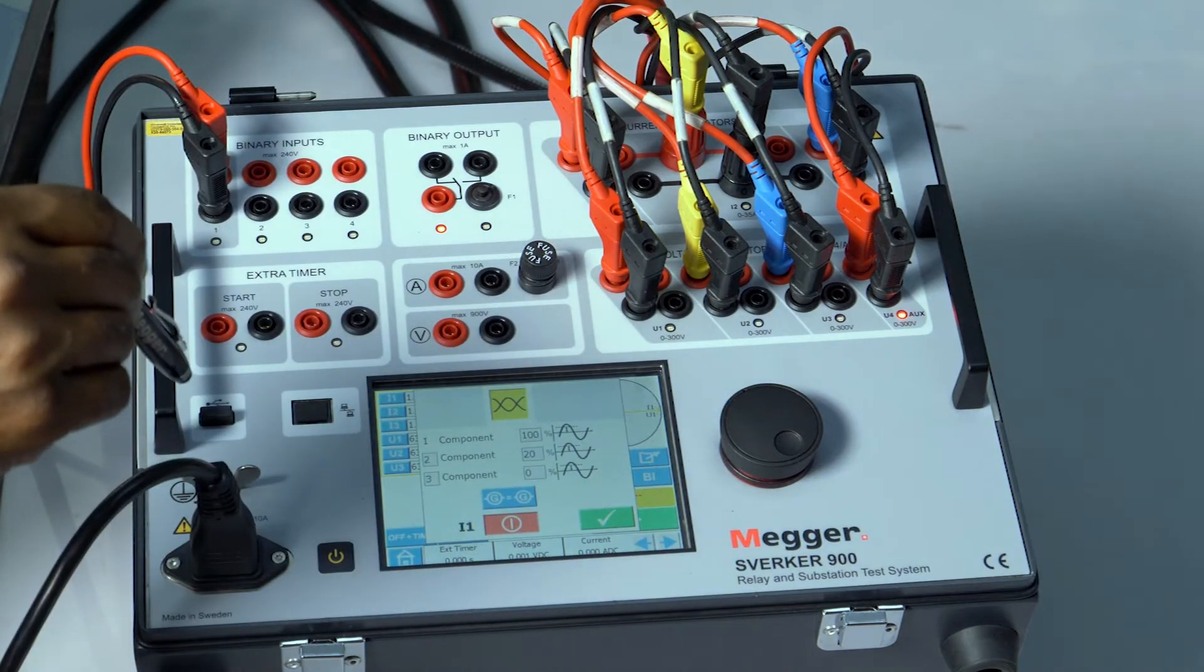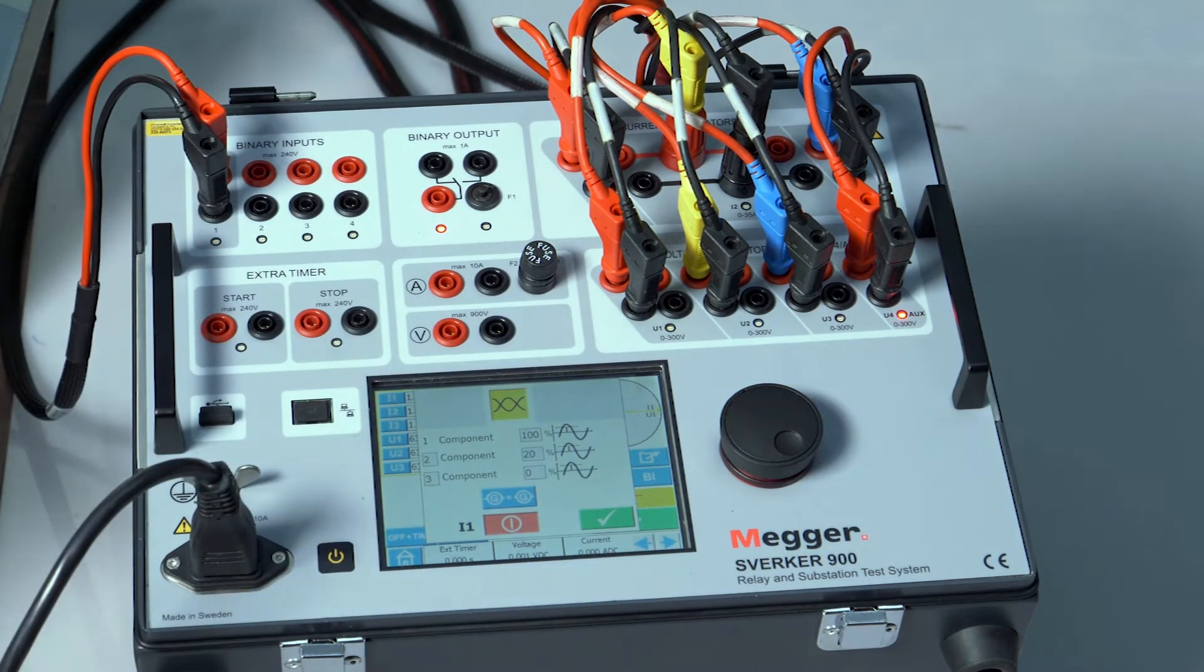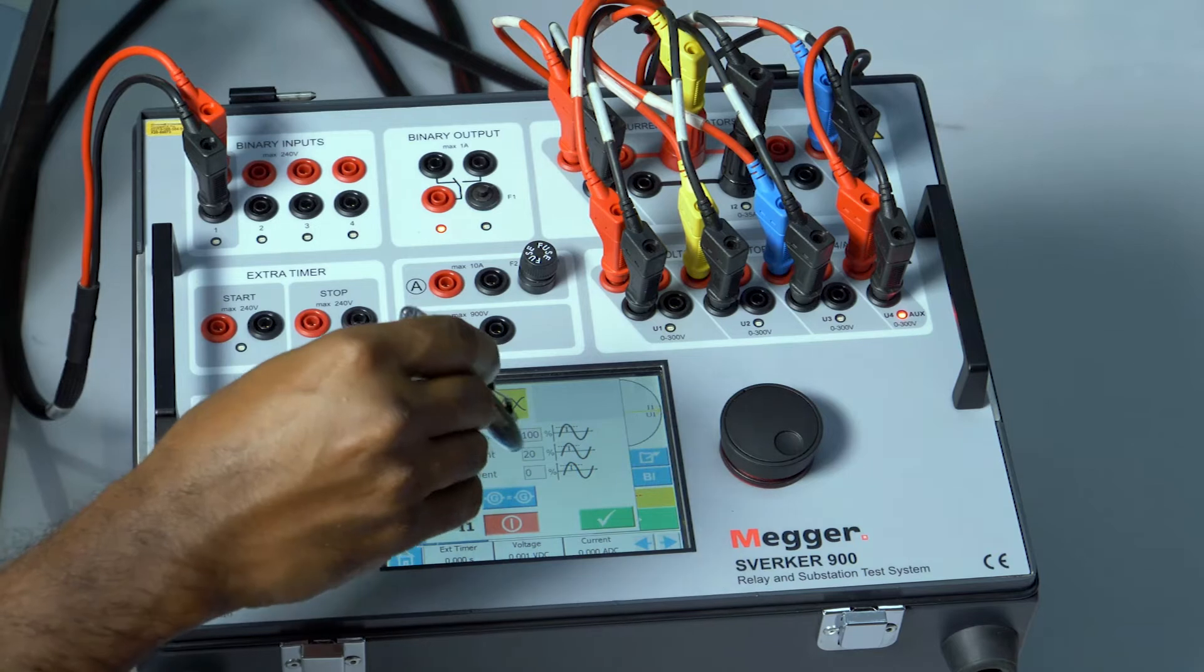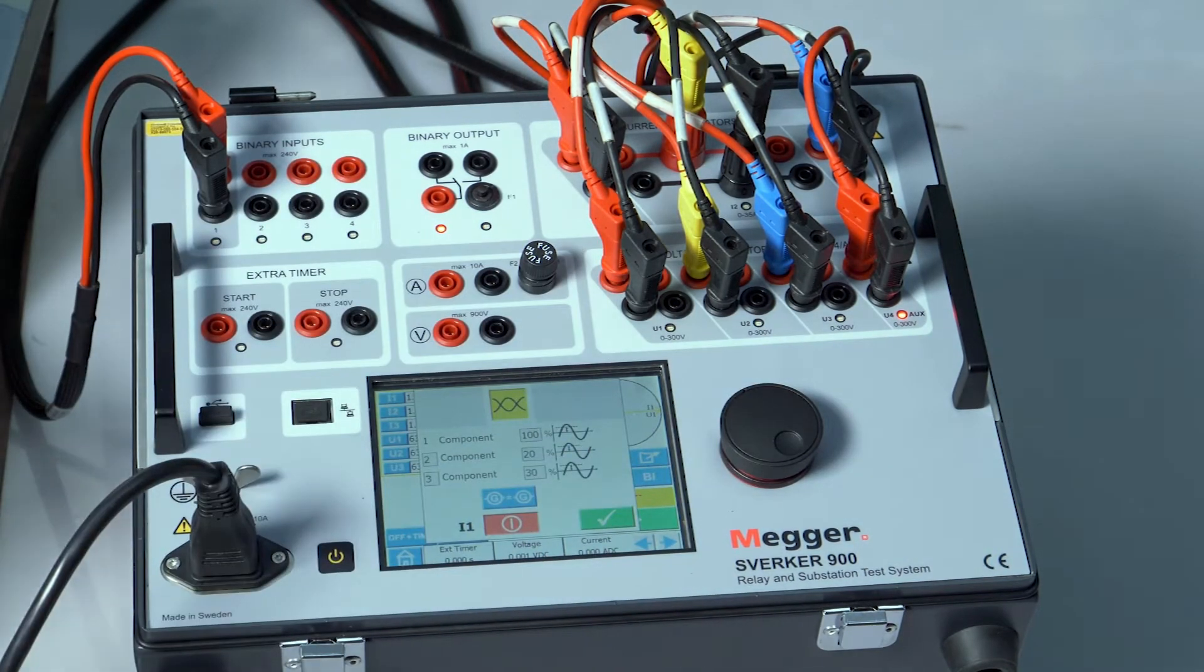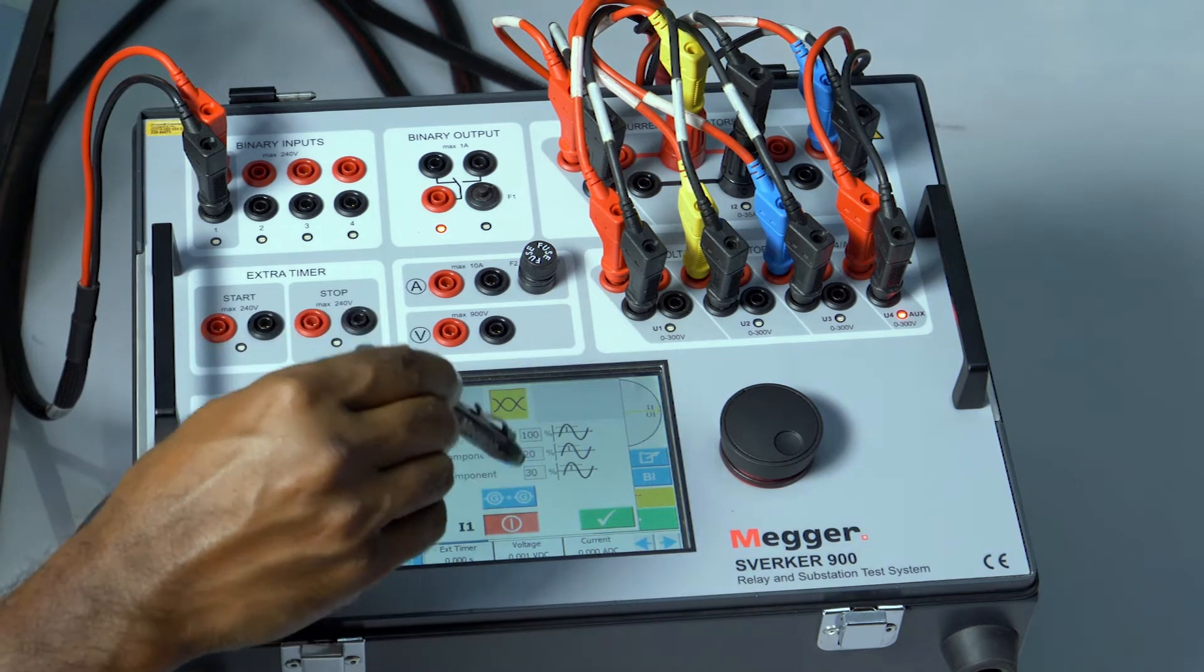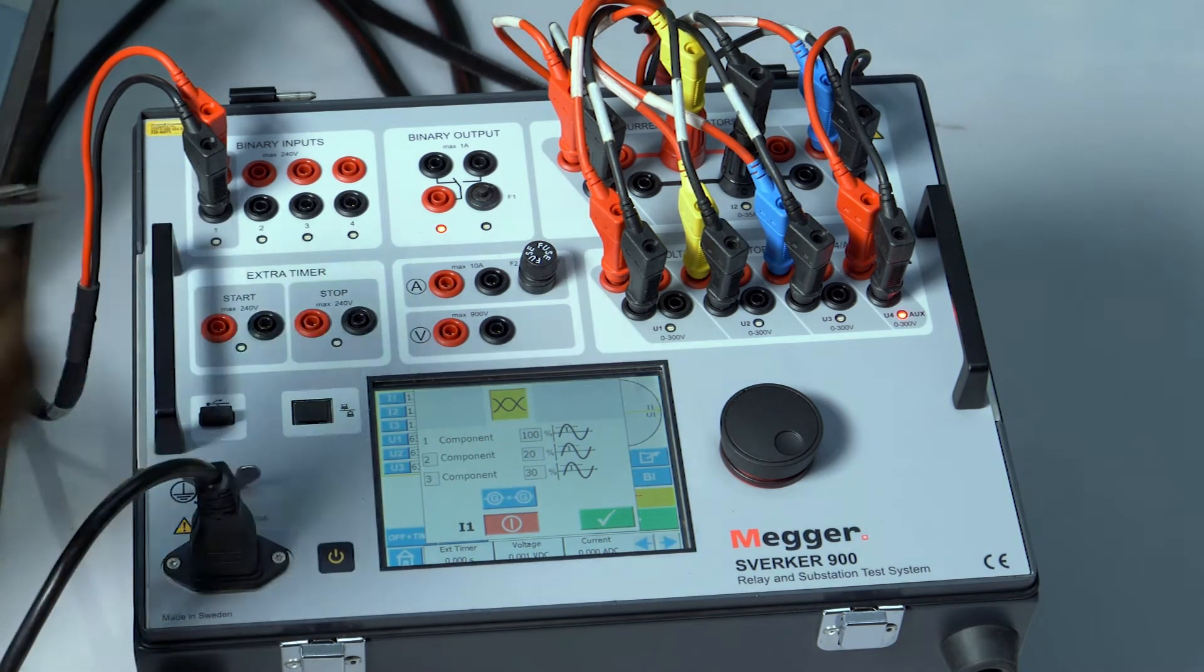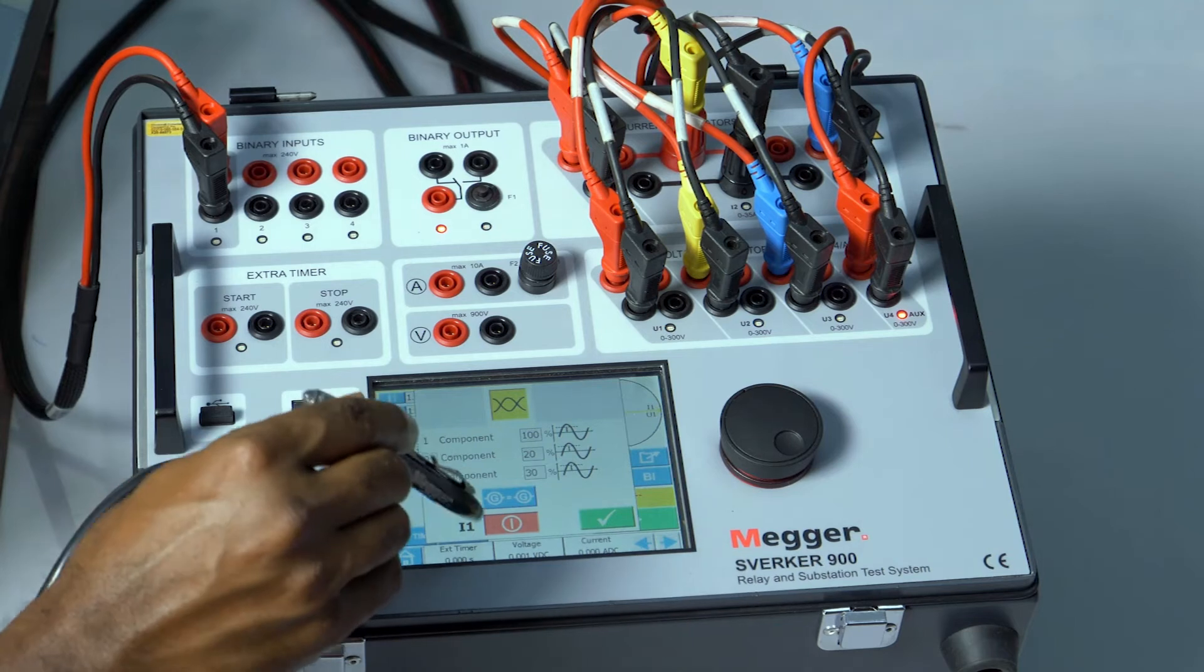So I can choose 2nd harmonic in this option and 3rd harmonic in this option. What is the percentage of 2nd harmonic? 3rd harmonic, let me enter 30%. By pressing this equals to button all the phases will inject in an equal manner.